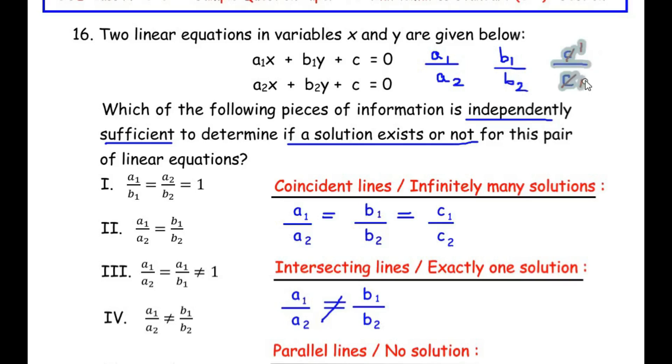So we can say that a₁/a₂ is equal to b₁/b₂ is equal to c₁/c₂ which is 1. And this kind of condition resembles the coincident lines, that is a₁/a₂ equal to b₁/b₂ is equal to c₁/c₂.